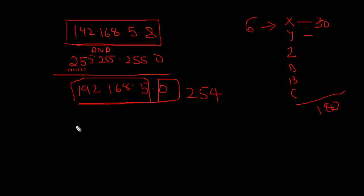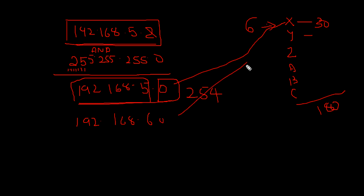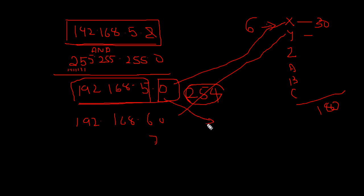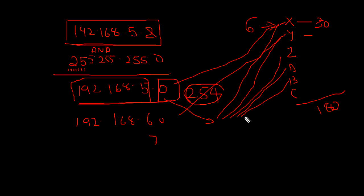Instead of taking separate network addresses for each branch — like 192.168.5.0, 192.168.6.0, 192.168.7.0 — where each has capacity 254 but my requirement is only 30, meaning I'd waste about 220 addresses per subnet — instead of that, I'll take this one network and divide it into 6 subnets. That is called subnetting.